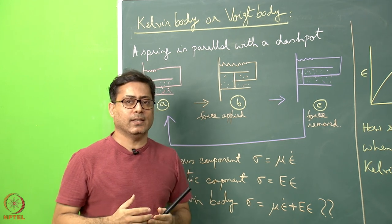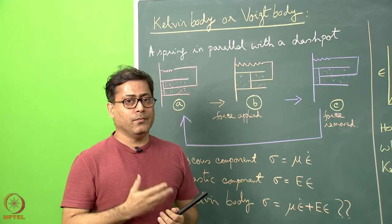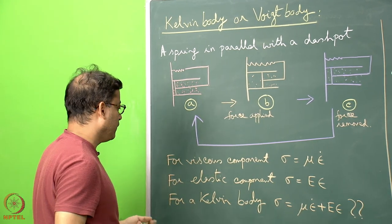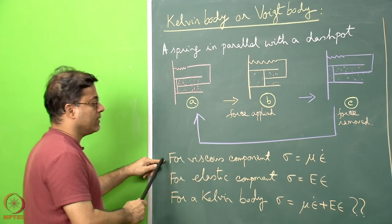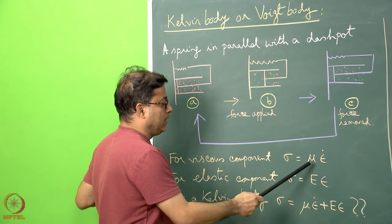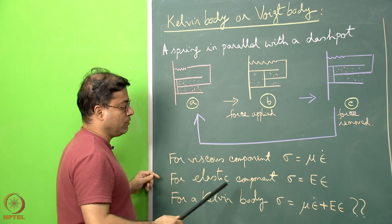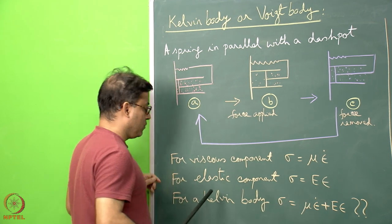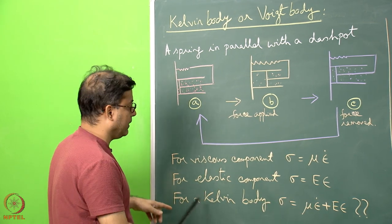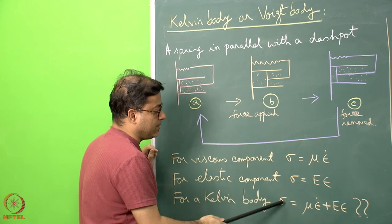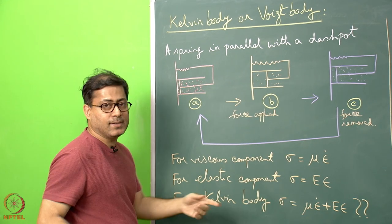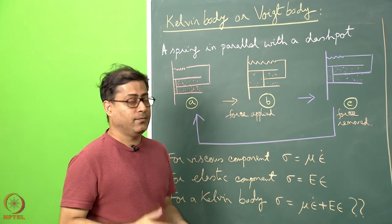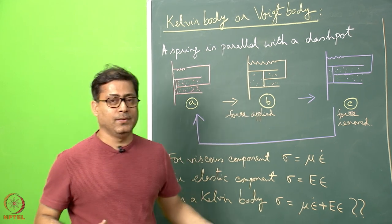In certain cases where earthquake waves interact with rock, the rock can behave in this manner. For a viscous component, stress equals viscosity multiplied by strain rate; for an elastic component, stress equals Young's modulus multiplied by strain. The question posed is: for a Kelvin body, is it correct to write stress as the sum of both? You may send an answer explaining whether this is right or wrong and why.